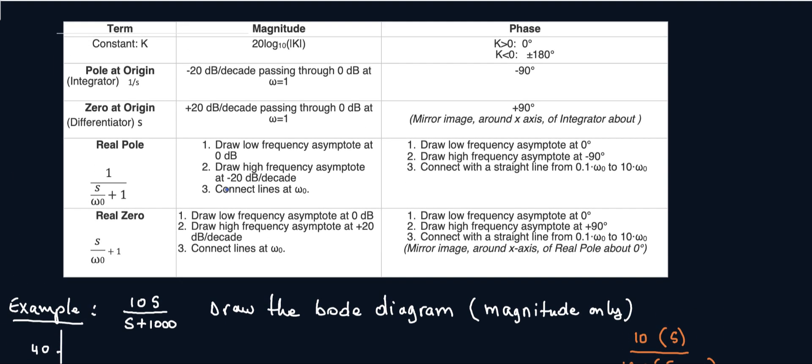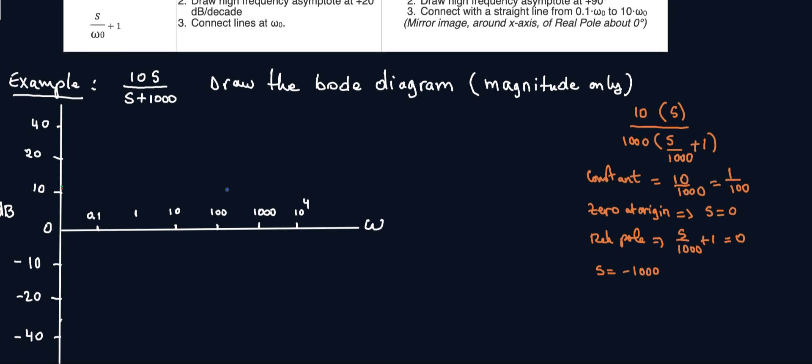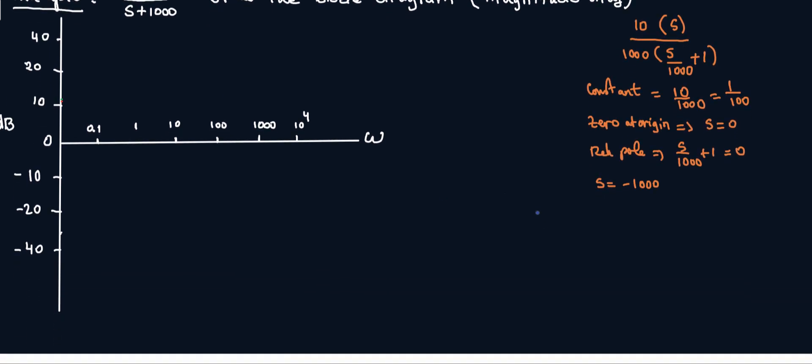So how do I draw a constant for any Bode plots? For a constant, my magnitude is just 20 log of the constant. So for the constant, I only have 20 log of my constant. My constant here is 1 over 100. And this is base 10, of course. So 20 log of 1 over 100. This is minus 40 dB.